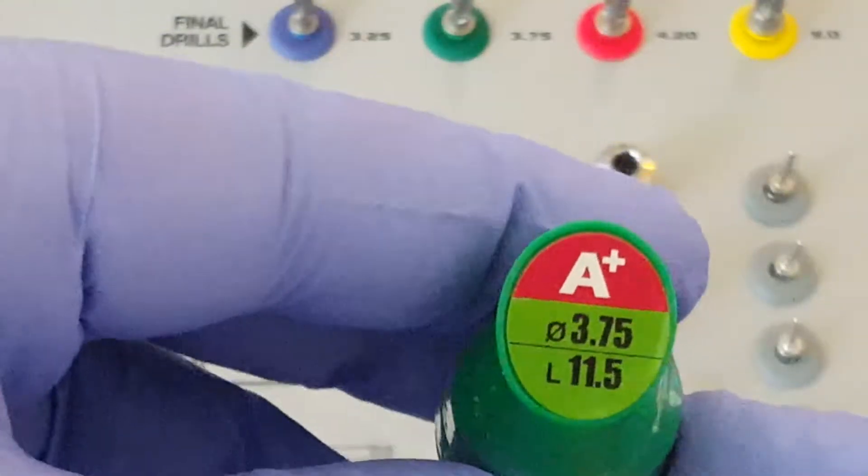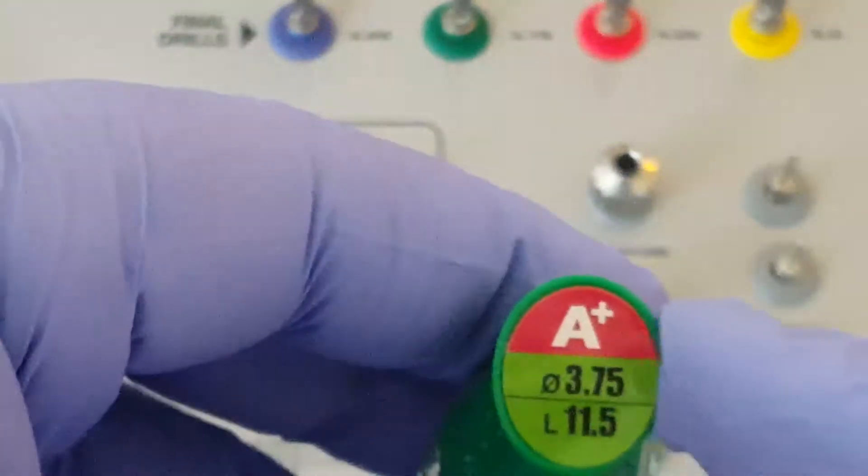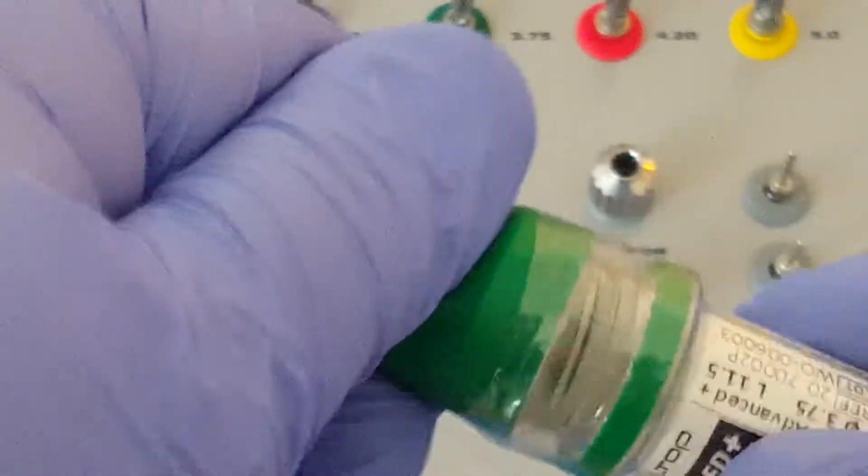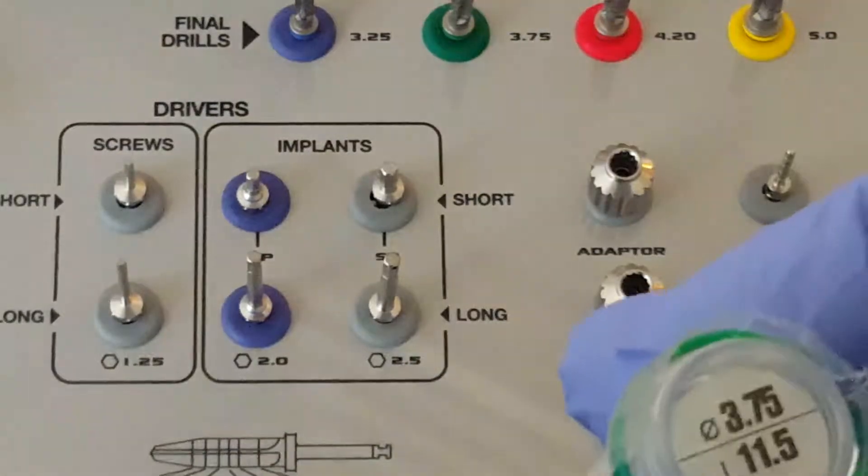If we look at a green vial, green again is 3.75, this is an advanced plus implant. We open the vial by twisting, again easily done by the doctor or the assistant.